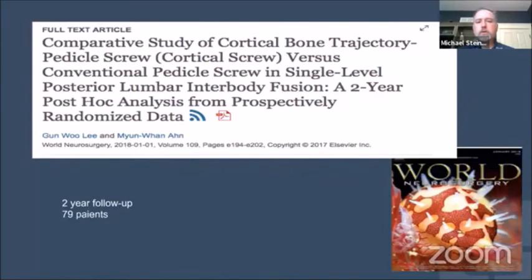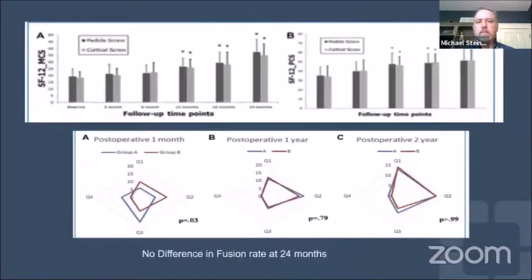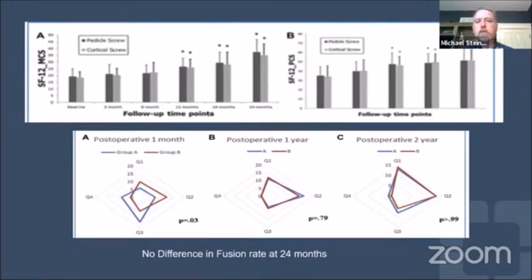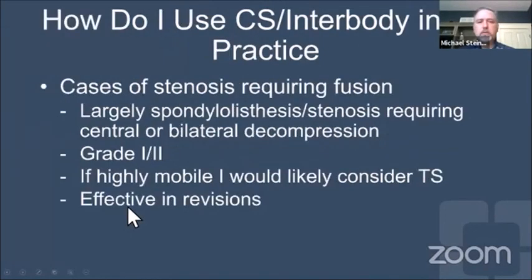An additional study of 79 patients out to two-year follow-up comparing traditional to cortical screws showed no difference in back pain, ODI, leg pain, or SF-12 outcomes at two years. The only benefit seen was in the perioperative period favoring cortical screws, with no difference in fusion rate. This demonstrates these are sound techniques — in standard degenerative cases, improved perioperative outcomes but equivalent long-term outcomes and non-union rates compared to traditional pedicle screws.